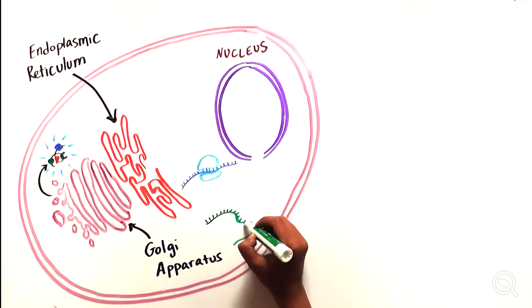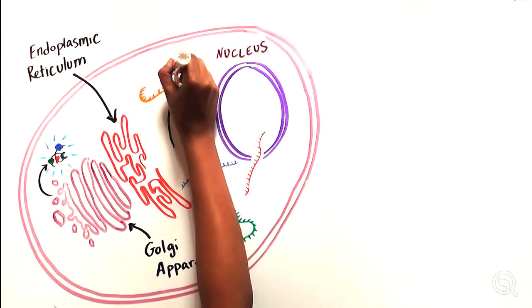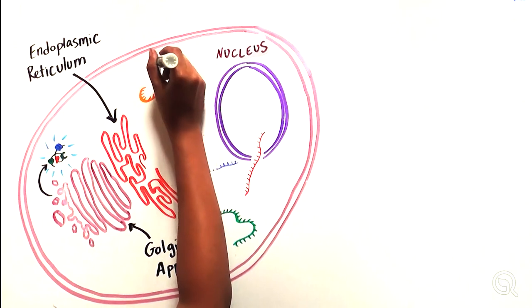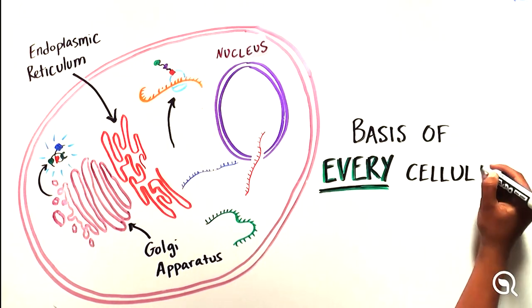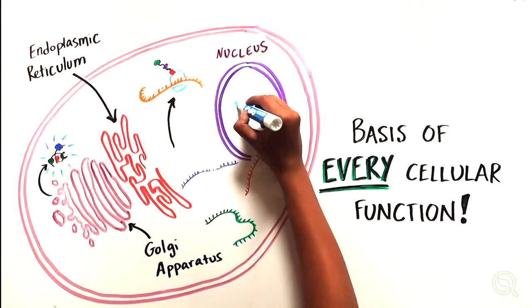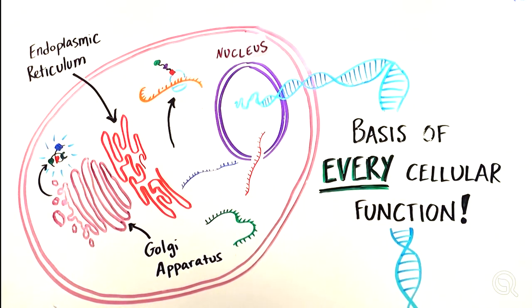Meanwhile, the ribosomes are reused to take part in the translation of other mRNA molecules. This elegant, complex process is the basis of every single cellular function in our bodies and helps ensure everything runs according to our molecular instruction code, our DNA.